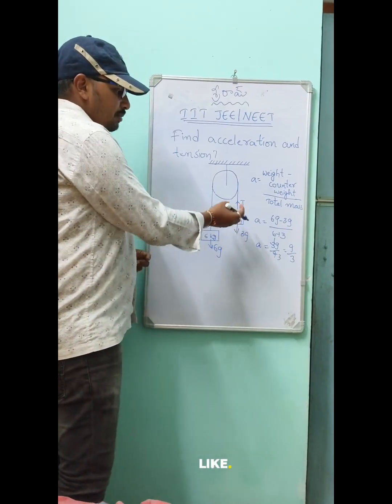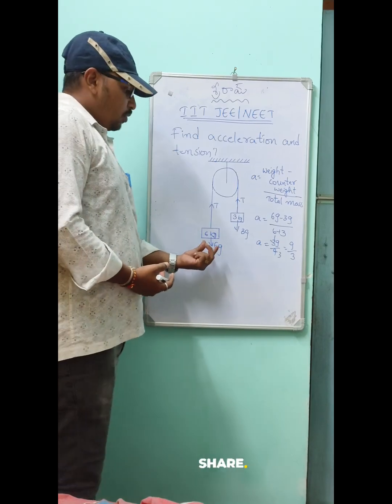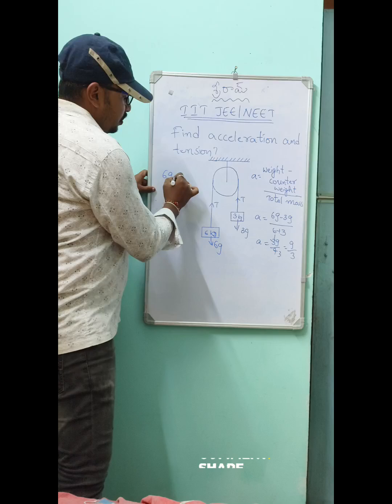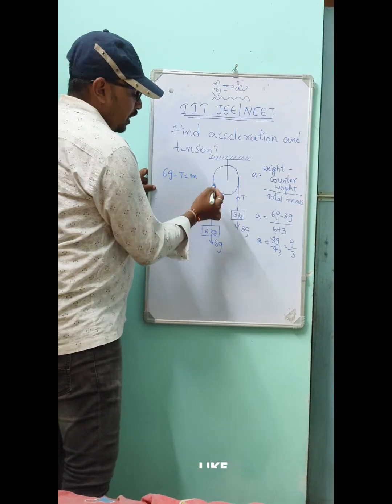We can draw a free body diagram for either block. We will take this block. Since the weight is more than the tension, we have 6g minus t equals m times a.